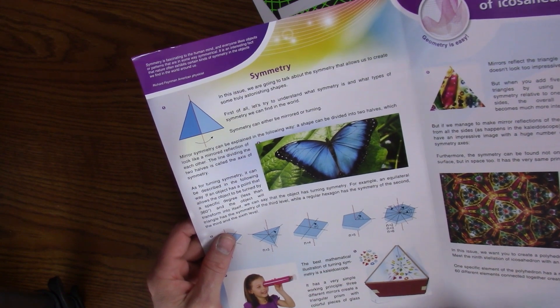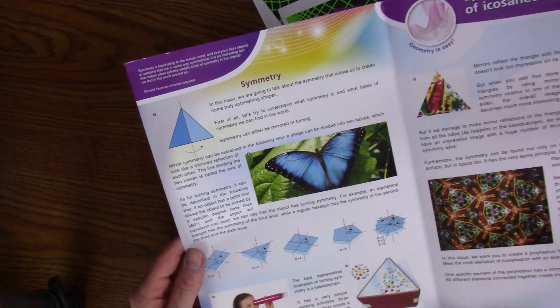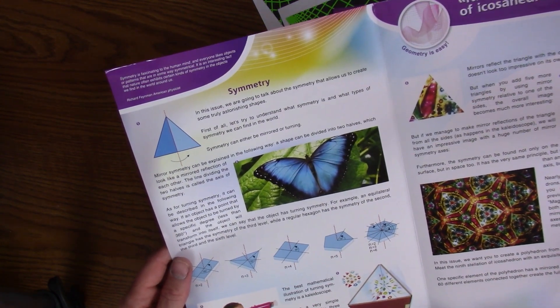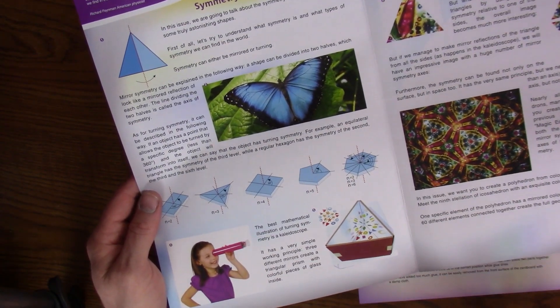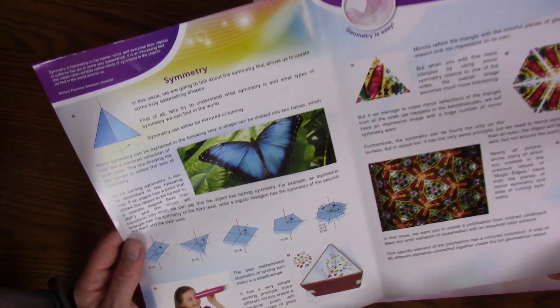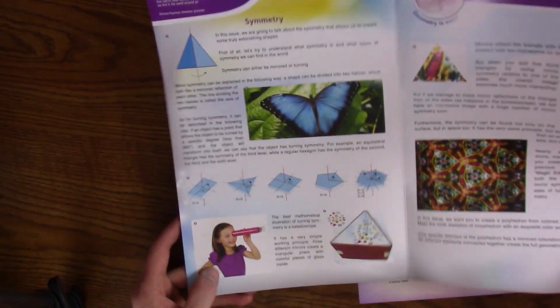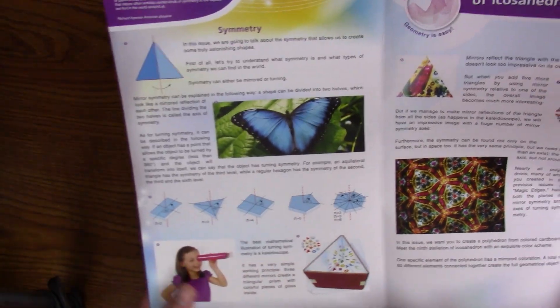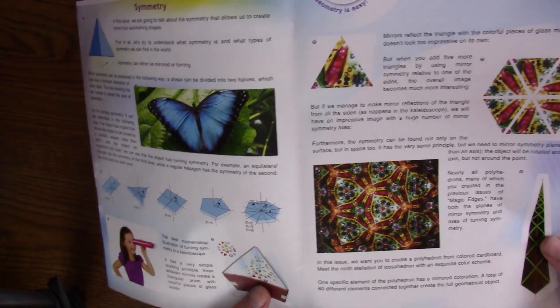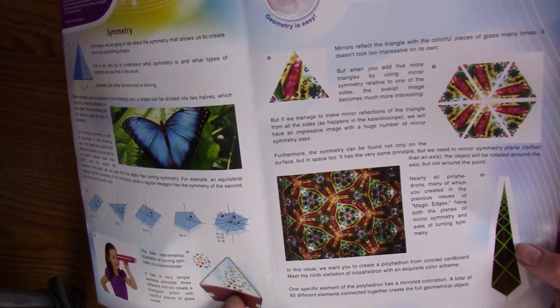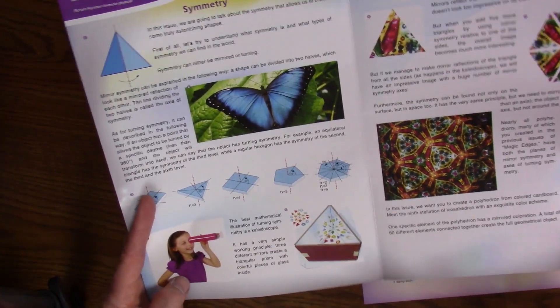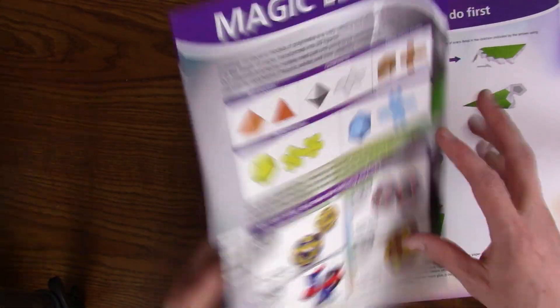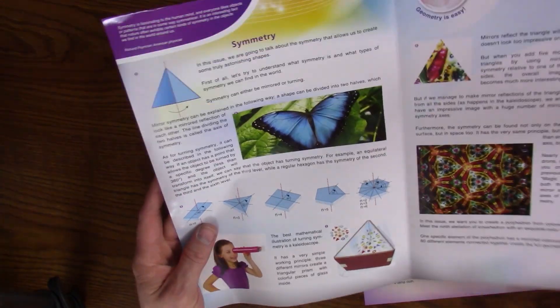Symmetry. In this issue, we're going to talk about symmetry. The best mathematical illustration of symmetry is a kaleidoscope. So this has all this educational information about symmetry, about geometry, very interesting. So it has this educational purpose behind it. This might be a good classroom tool.